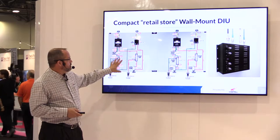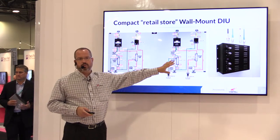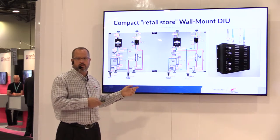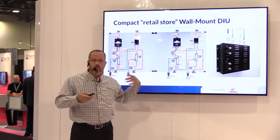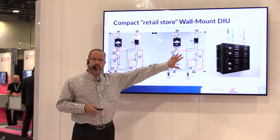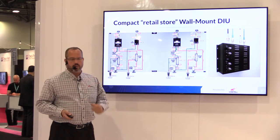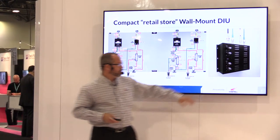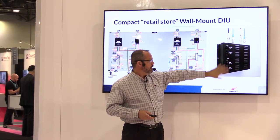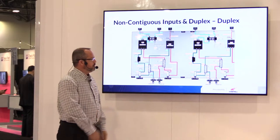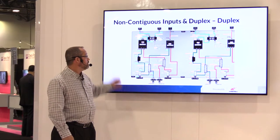We took that two-path design and went a step further for the retail store environment. Even though those two-U trays can be mounted to the wall, there was a customer in one of the markets that wanted something a little more wall-friendly. So we came up with this design, which is two paths. It can be for low power or high power, and all your attenuation is right on the front. This sits on the wall just like this, you get cable coming in, set your attenuation, and go.